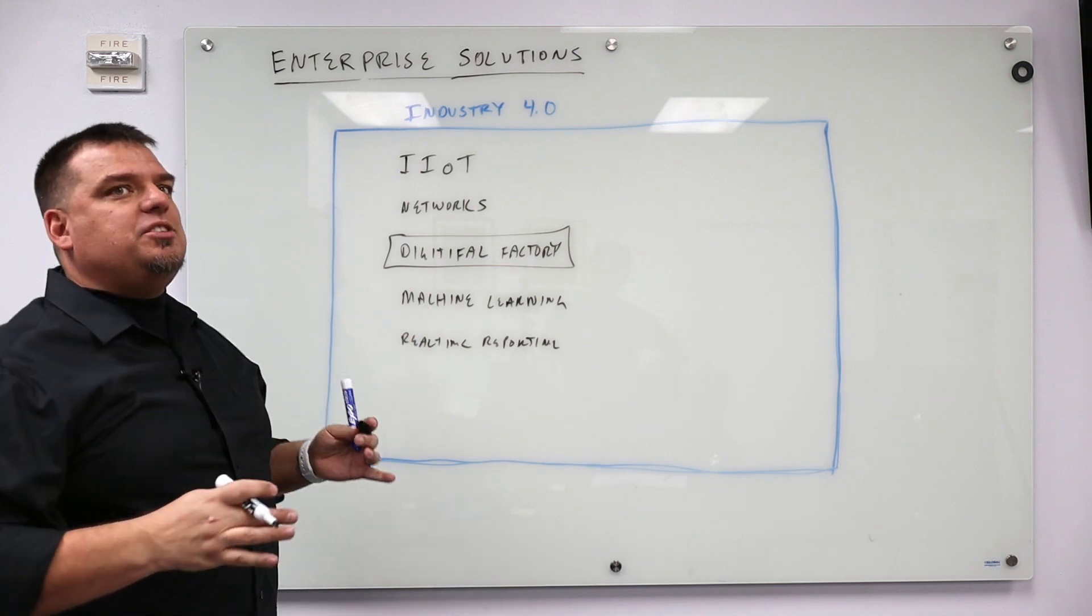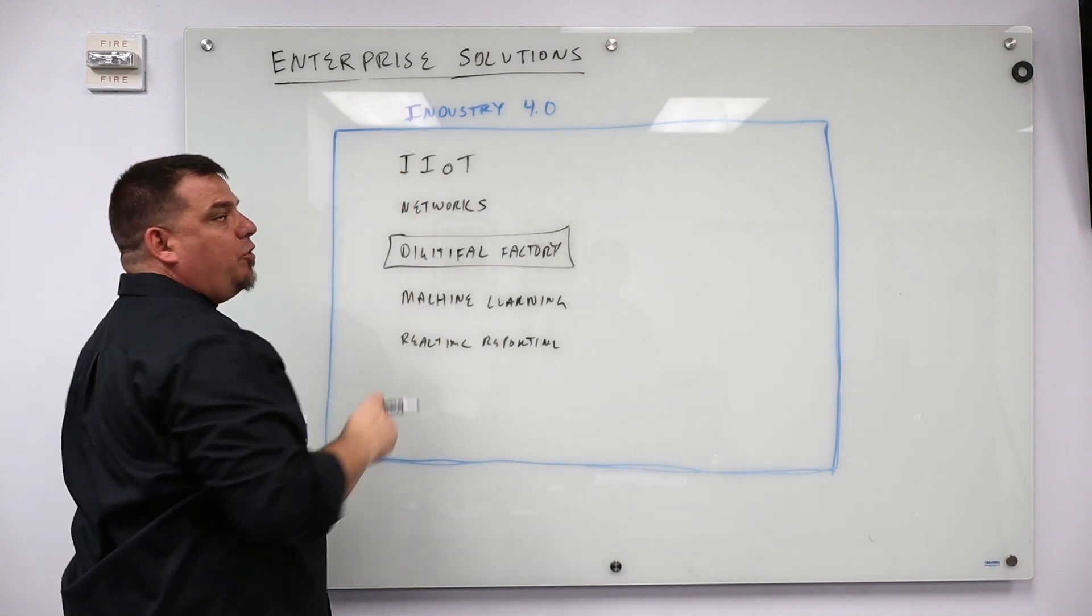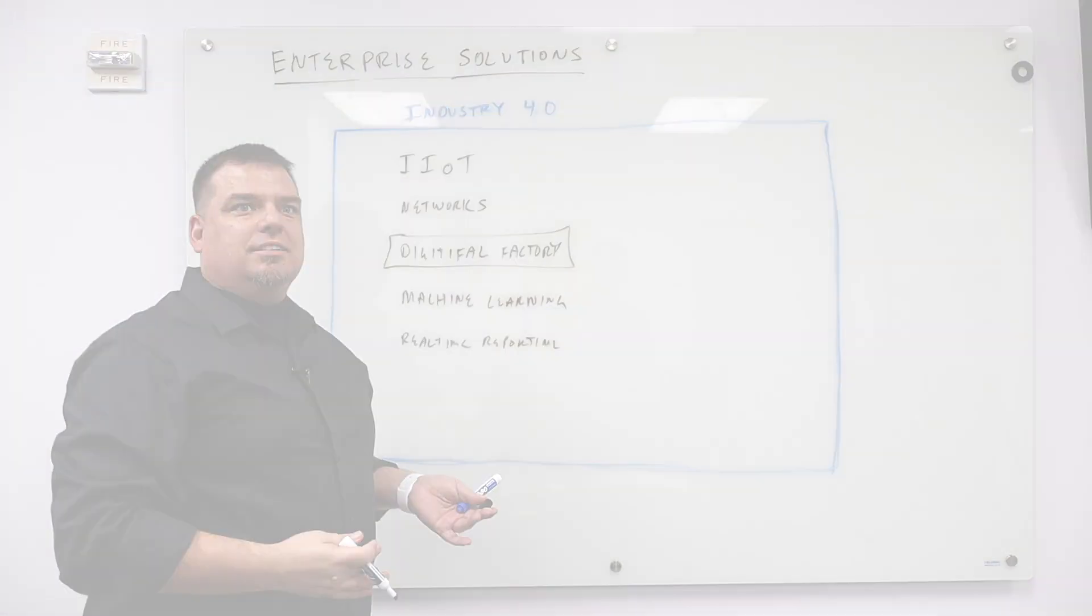Industry 4.0 is a very basic concept. The difference between IIoT and Industry 4.0 is that IIoT makes Industry 4.0 possible.